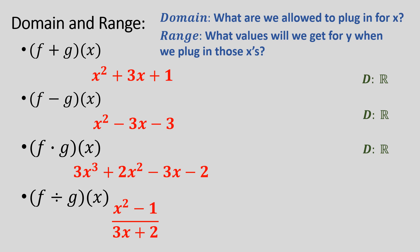For example, in this very bottom function operation, the f divided by g, we end up with a fraction. And the thing that restricts the domain in this one is that we can't have a zero in the denominator. It's not allowed, we're not allowed to divide by zero.